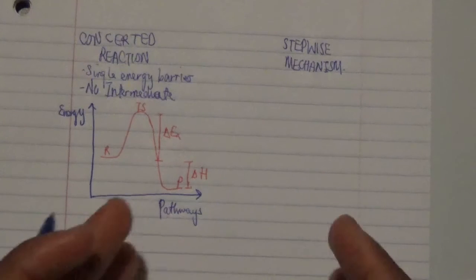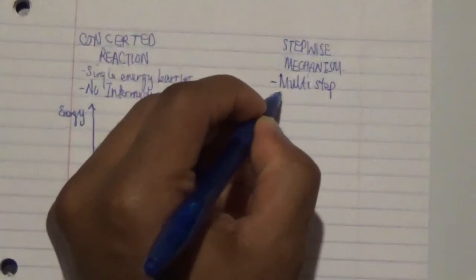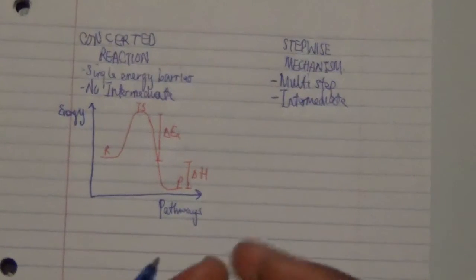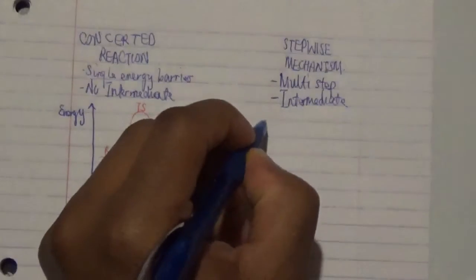On the other side, we have the stepwise mechanism, which involves multiple steps. Once you have multiple steps, you need to include intermediates. In this mechanism, multiple steps involve intermediates, and each intermediate leads to a transformation — either into another intermediate or ultimately into the final product from the reagent.